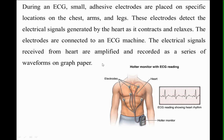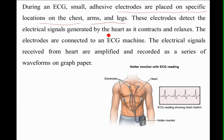During an ECG, small adhesive electrodes are placed on specific locations of the chest, arms, and legs. These electrodes detect the electrical signals generated by the heart as it contracts or relaxes. The electrodes are connected to the ECG machine, and the electrical signals received from the heart are amplified and recorded as a series of waveforms on graph paper.